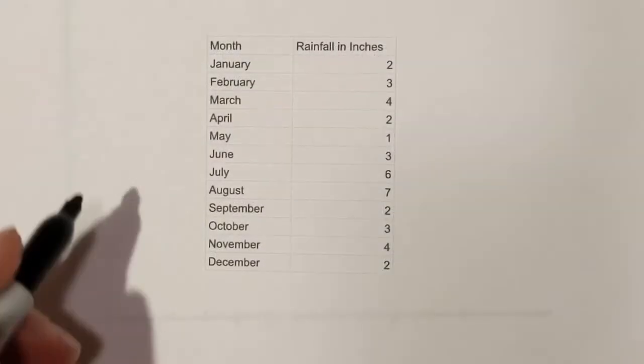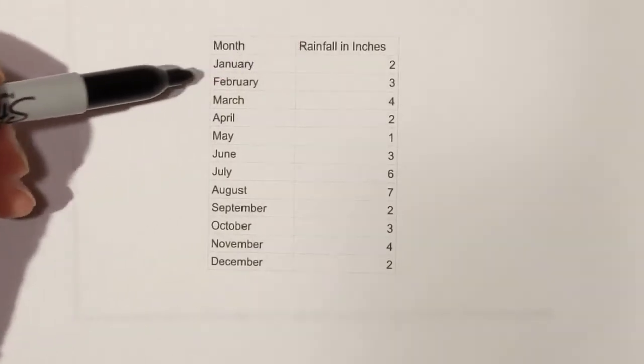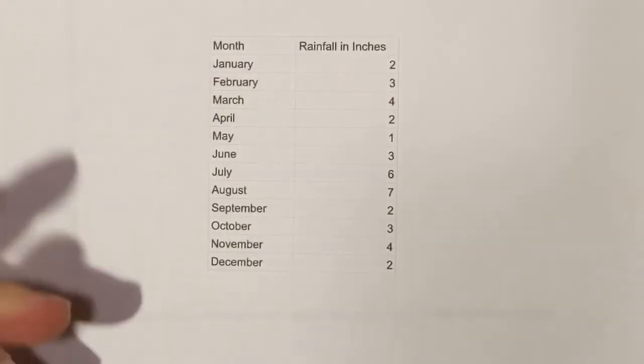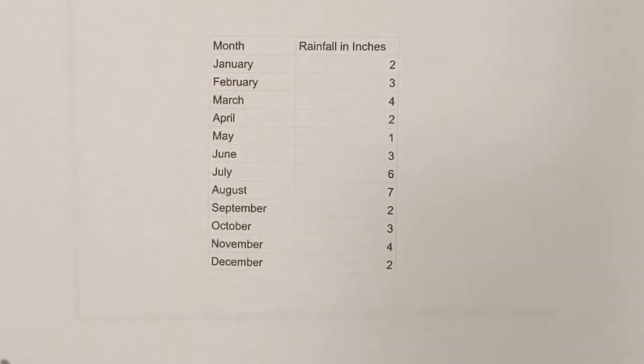Here's the data that we're going to plot. It's a fictitious city and its rainfall for a year each month. It is over time, so it's a good set of data for a line graph.